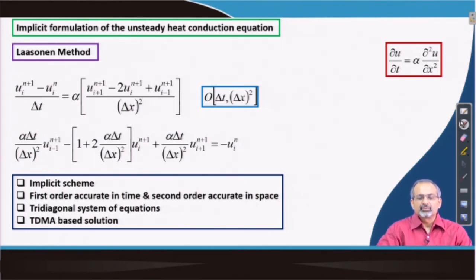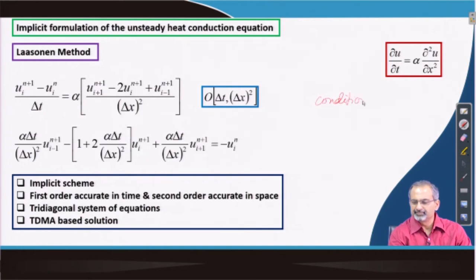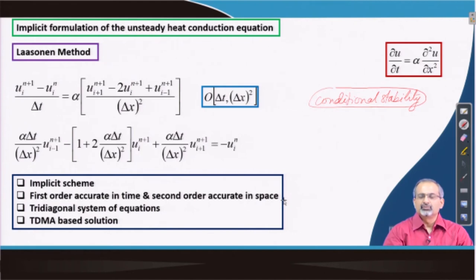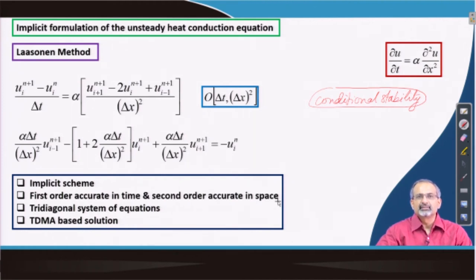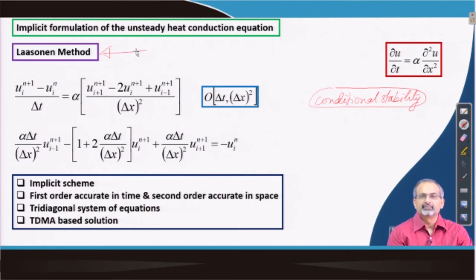The FTCS solution was an explicit solution of the unsteady heat conduction equation. We will now discuss a possible implicit formulation. Recall that the FTCS scheme exhibited conditional stability — a certain condition had to be followed to keep computations stable and give meaningful results. We are interested in whether switching from explicit to implicit schemes would affect stability. To test this, we introduce the Lassonen method — also called the Lassonen scheme — where the terms and schemes are interpreted synonymously.